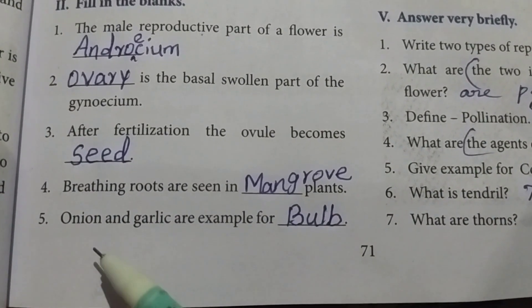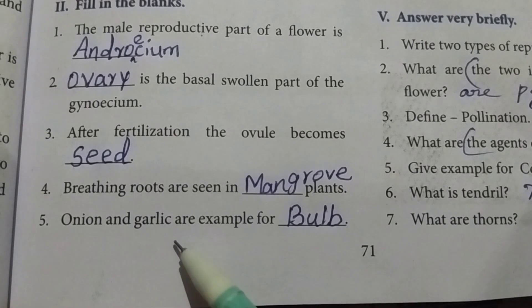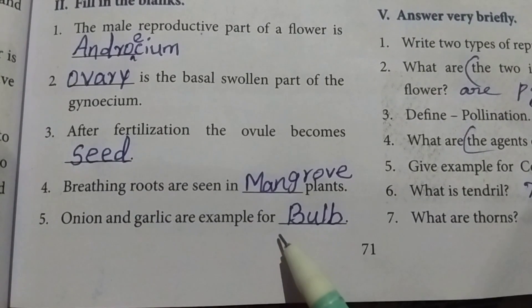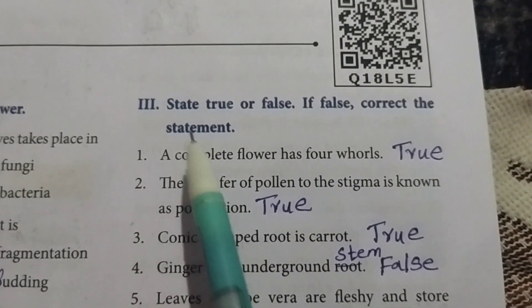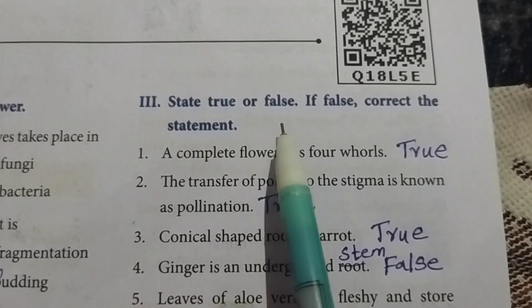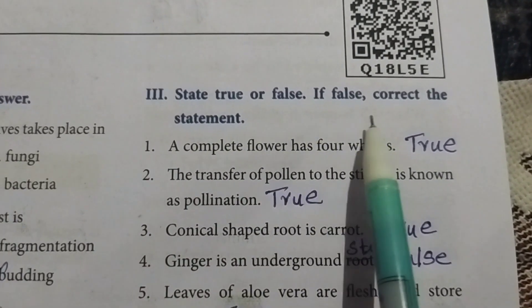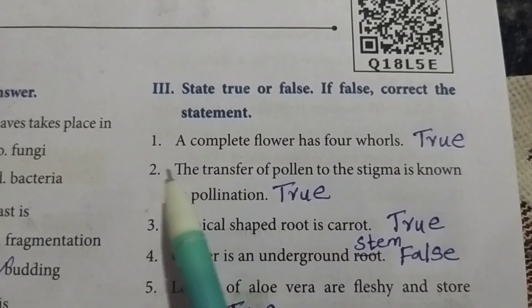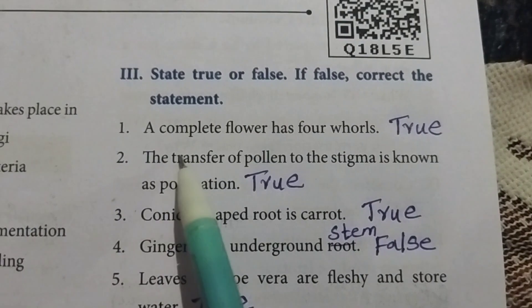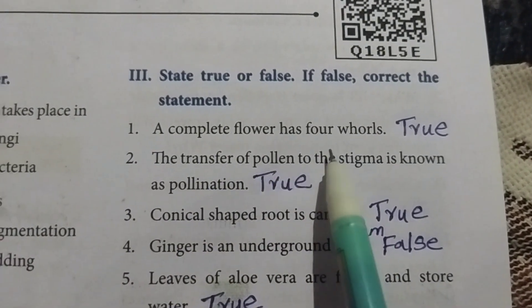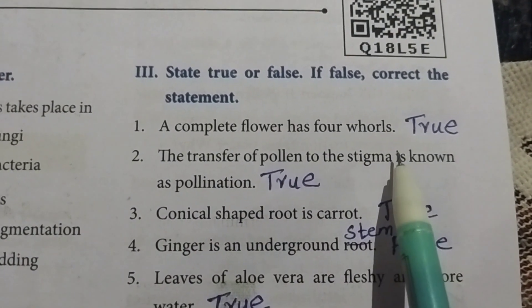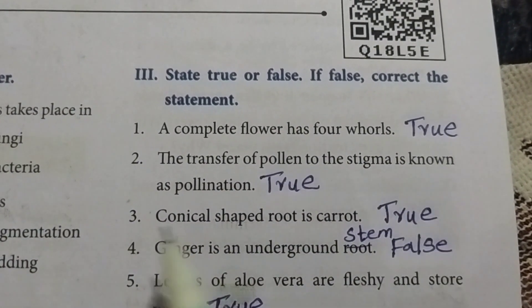Fifth one: Onion and garlic are examples for bulb. Roman numeral III: State true or false. If false, correct the statement. First one: A complete flower has four whorls. The statement is true.